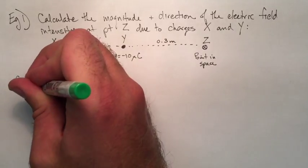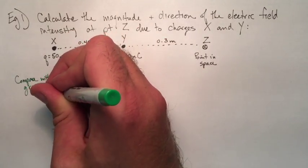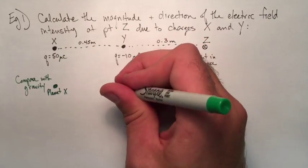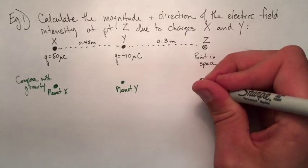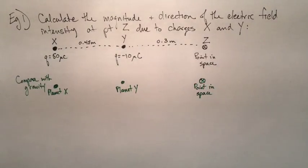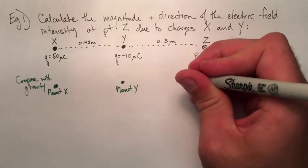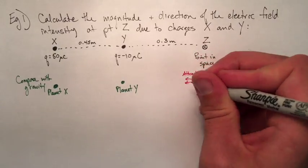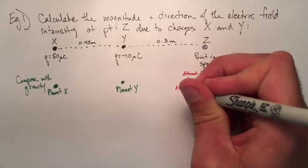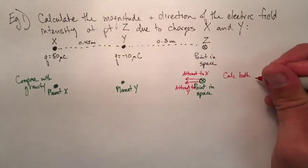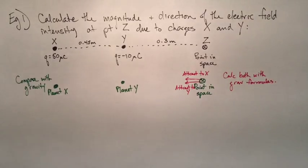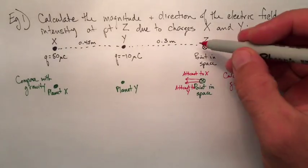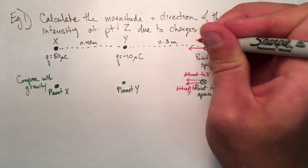We can actually compare it, if you want to think of it, to gravity. Say x and y here are two planets, and you're just floating out into space at point z. What would you feel due to those planets? Well, you would feel a gravitational attraction to x and a gravitational attraction to y. And we can use those two as vectors as we draw them here at point z. The total gravitational attraction would be the sum of those two vectors. But an electric field is a little bit different than this. Here above z, we're going to feel an attraction to y, because y is a negative charge.